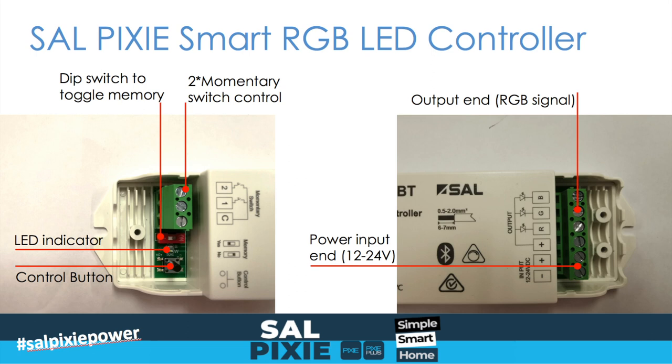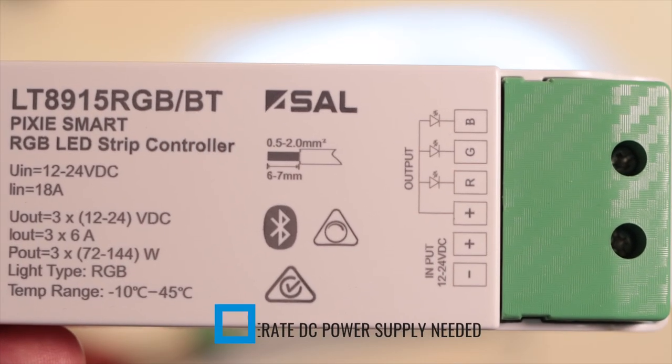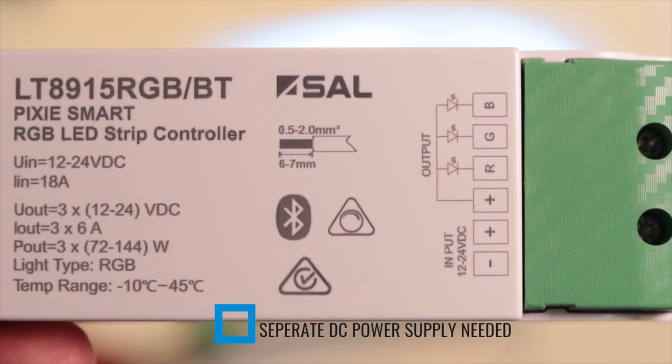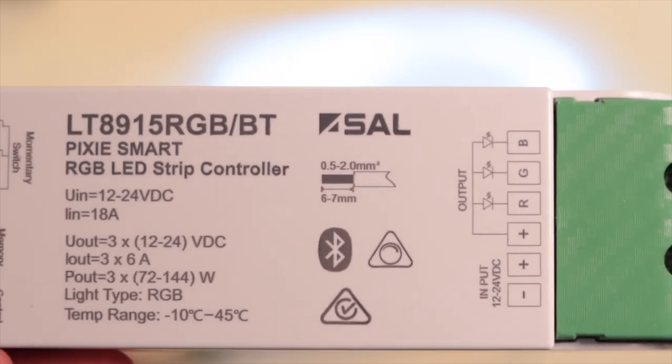On the right hand side we have our RGB connections and the place for the 12 to 24 volt power supply to be connected to match the attached LED strip that you're attaching to it.